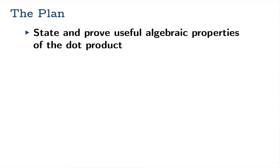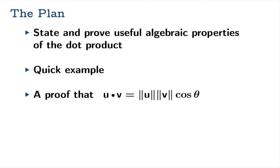In this video we will examine the algebraic properties of the dot product. We'll state and prove useful algebraic properties, look at a quick example, and then provide another proof that the dot product of u and v gives you the length of u times the length of v times the cosine of the angle in between those two vectors.